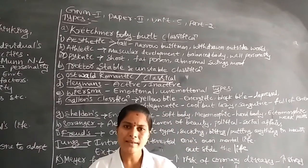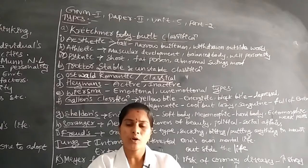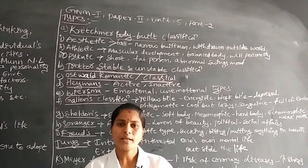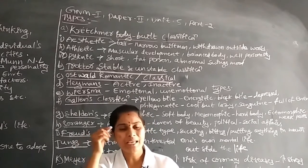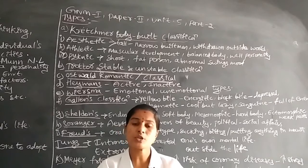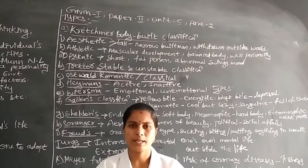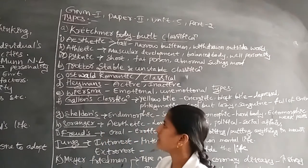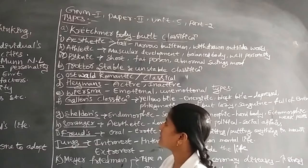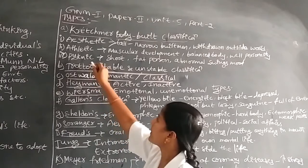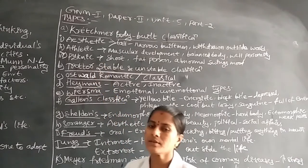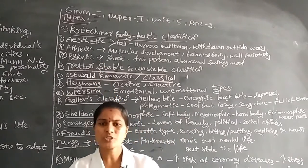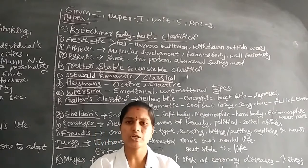The body is balanced, and according to their physical body, their mental capacity is also normal. Next, the third type is pyknic personality. In this, their body structure is very short.